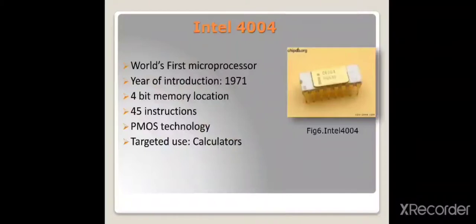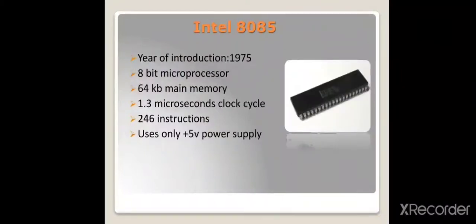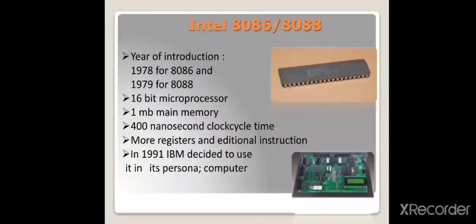After this, in 1972, the Intel 8008 was introduced, followed by the 8085. The 8085 was also an 8-bit microprocessor, similar to 8008, but with key differences such as a 1.3 microsecond clock cycle, 5-volt power supply, and 64 KB main memory size.